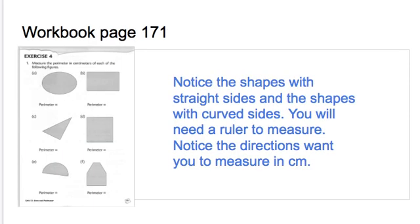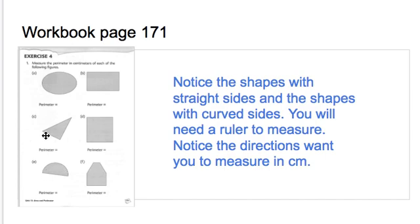What I would like for you to do today is print out the workbook page, page 171. First, notice what the directions say — it says to measure the perimeter in centimeters of each of the following figures. So you don't have the choice to do inches, because the directions want it in centimeters. Also notice the different shapes and figure out which ones have straight lines and which ones have curved lines. Shapes A and E both have curved lines, so you will need string for A and E. Measure the string and also measure the straight sides with your ruler in centimeters.